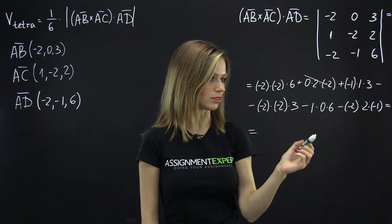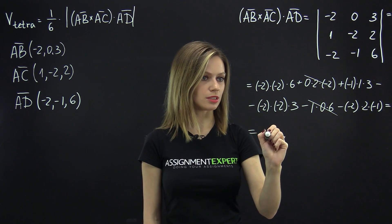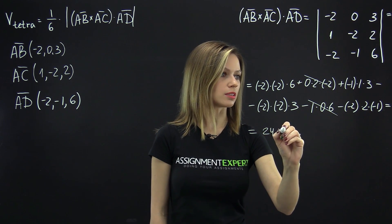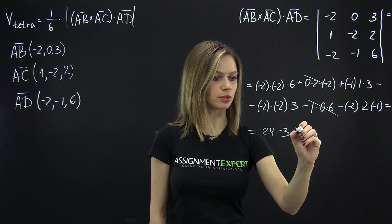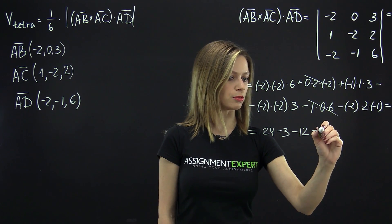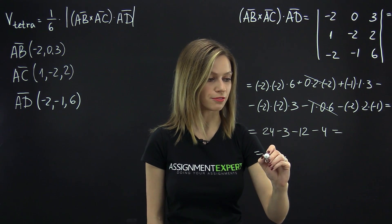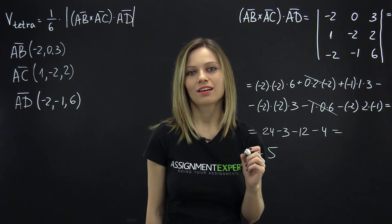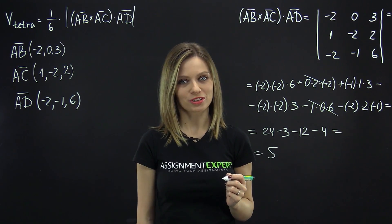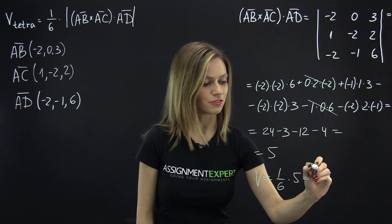The two middle terms are automatically equal to zero, so we cross them out. We have 24 minus 3 minus 12 minus 4, which equals 12 minus 7, which equals 5. Finally, substituting this result into the formula, we can obtain the volume of our tetrahedron: one-sixth times 5, which is equal to 5/6.